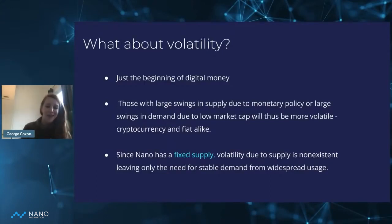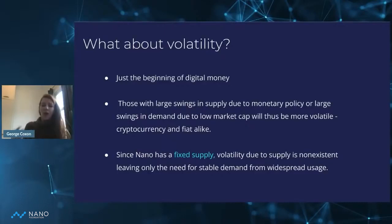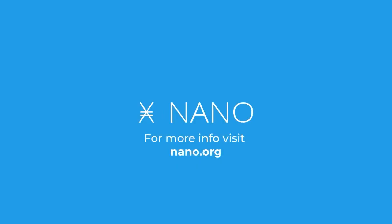With Nano, it has a fixed supply, so volatility due to supply is non-existent, leaving only the need for stable demand from widespread usage. We are working towards larger adoption, and with adoption and usage, Nano creates less volatility across the network with steady volumes going through.